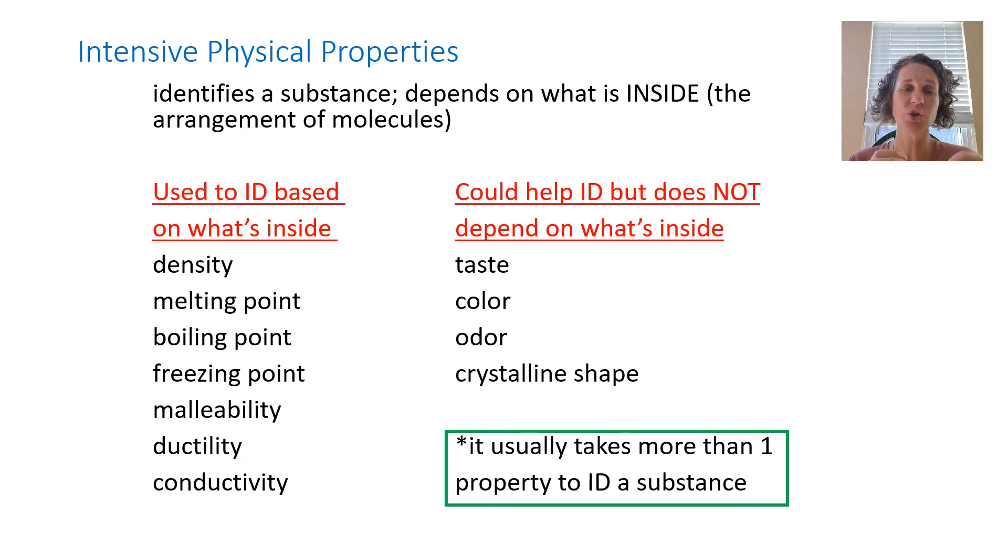Other intensive properties that could help but are not necessarily as definitive are the taste of something. Again we put taste on here, but that doesn't mean you should taste everything. People die. Color again, that is an intensive property but it's definitely not one that you could use solely to identify something. Odor, crystalline shape, so that is what like an individual crystal would look like. These intensive properties are a little bit more specific to a substance. Even if you do have a very specific thing like melting point, you usually would want to know a couple of the other properties before you can positively identify a substance.